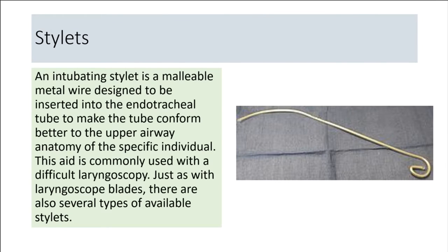An intubating stylet is a malleable metal wire designed to be inserted into the endotracheal tube to make the tube conform better to the upper airway anatomy of the specific individual. This aid is commonly used with a difficult laryngoscopy. Just as with laryngoscope blades, there are also several types of available stylets.